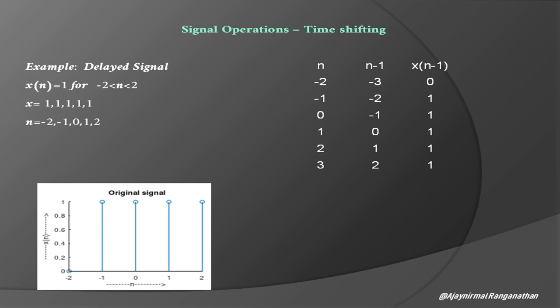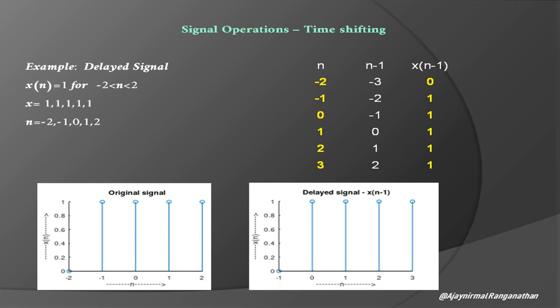Now we plot a graph between x[n-1] and n. We should not plot between x[n-1] and n minus 1, because we are looking at the delayed signal. Plotting x[n-1] versus n, we can see that x[n-1] equals 0 at n equals minus 2, and x[n-1] equals 1 between n equals minus 1 to 3. This is the delayed signal graph. Next we will look at the advanced signal.